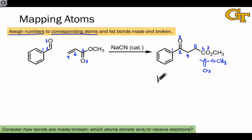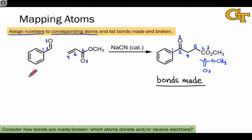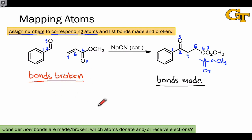Now let's generate lists of bonds made in the products — bonds that exist in the products that did not exist in the starting materials — highlighted in black — as well as bonds broken in the starting materials — bonds that existed in the starting materials that no longer exist in the products — highlighted in red. Drawing in implicit hydrogens is extremely important because very often hydrogens can go unnoticed even when CH bonds are broken, and that's what's going on here.